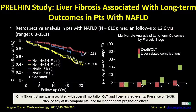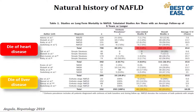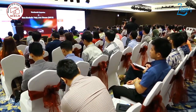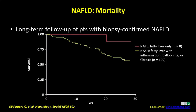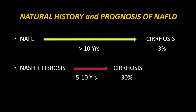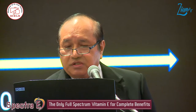Liver fibrosis is associated with the complications of NAFLD. As mentioned, NAFLD patients with simple steatosis tend to die of cardiovascular complications, but the majority of patients with NASH succumb to liver disease. Long-term follow-up biopsy studies confirm that mortality in NASH is worse than in simple NAFLD. To conclude on the natural history: from NAFLD to cirrhosis takes more than 10 years, and 3% will progress to cirrhosis. However, if the patient has NASH or established fibrosis, within half that duration, 30% of patients will end up in cirrhosis.